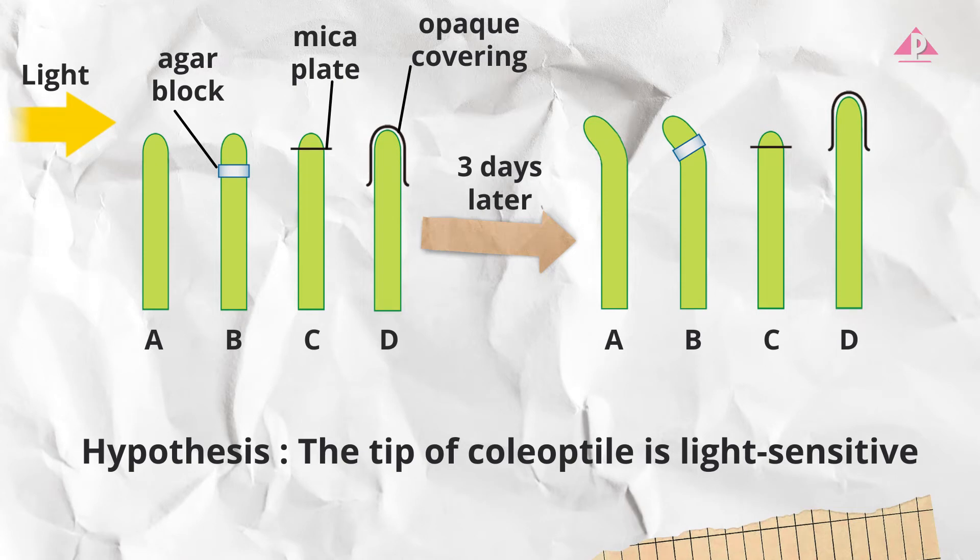Experiments about phototropism are typical examples in exam questions to evaluate whether students can choose suitable setups to test a hypothesis.